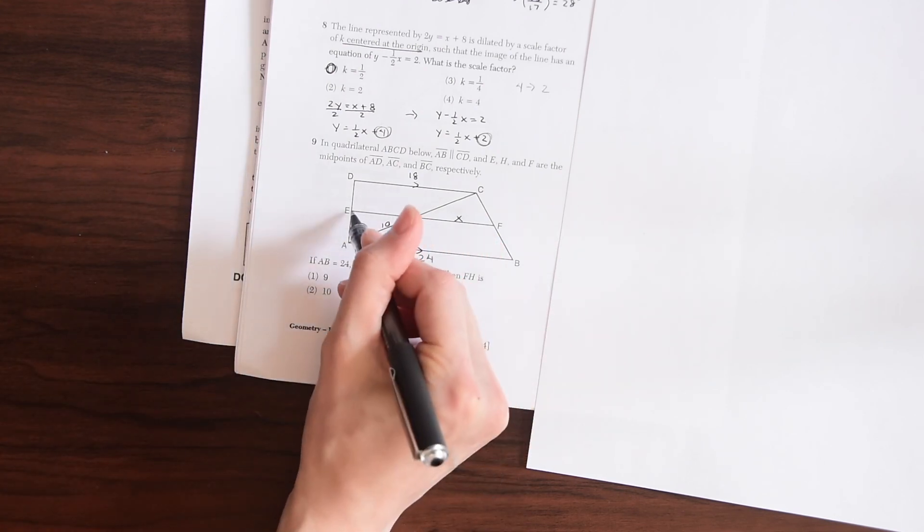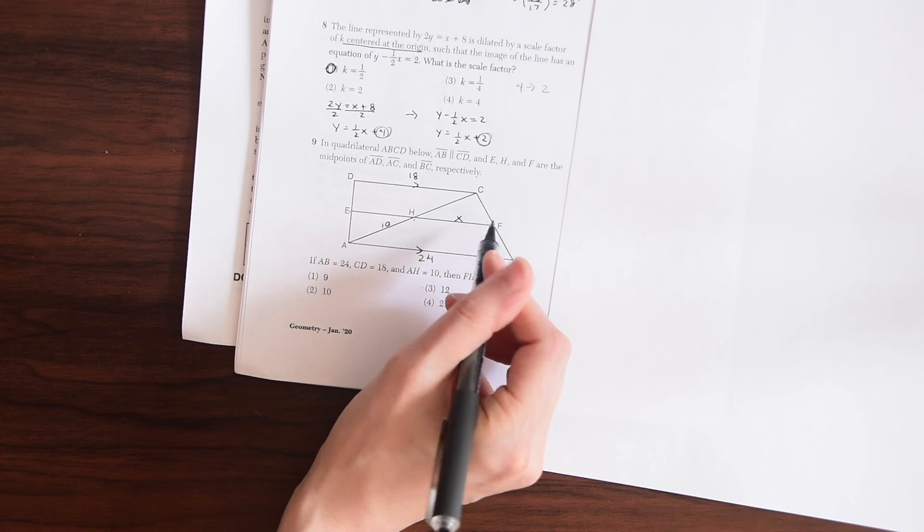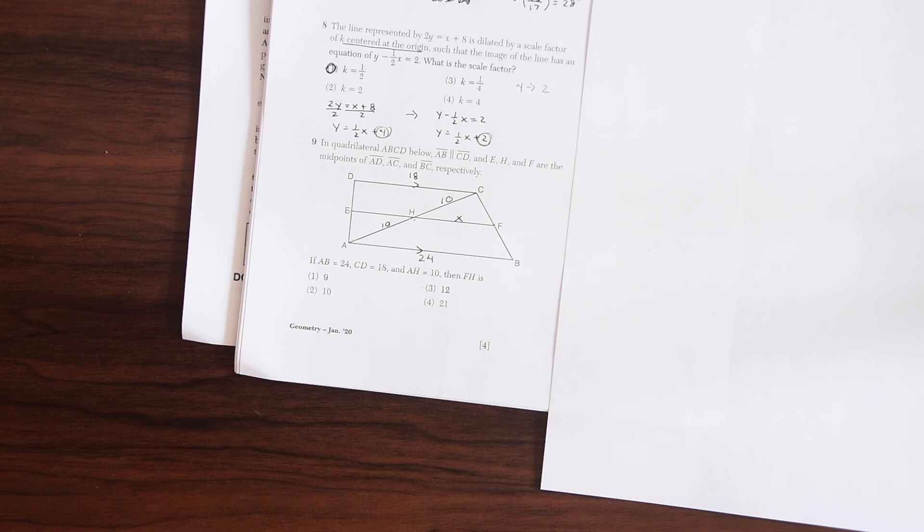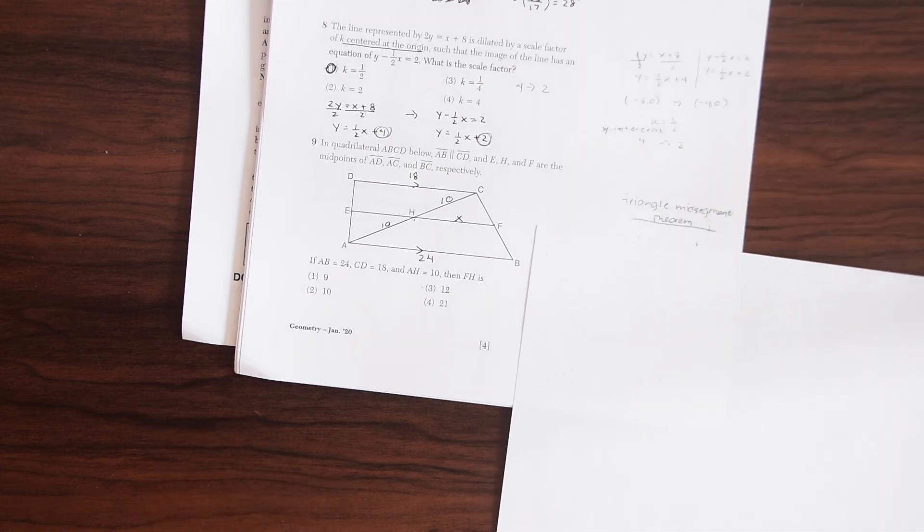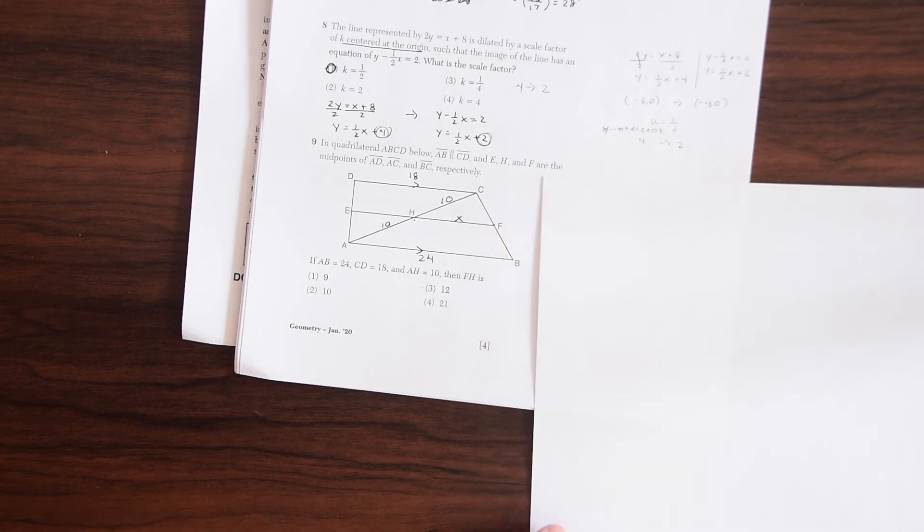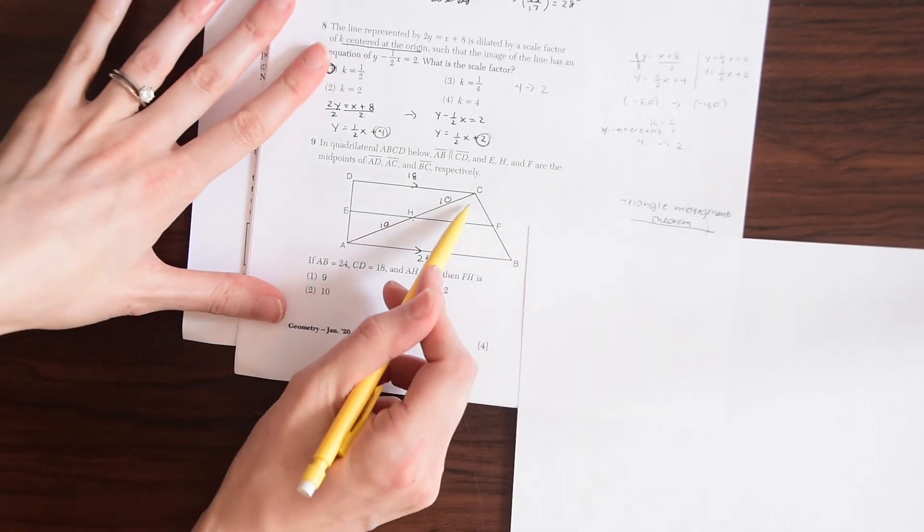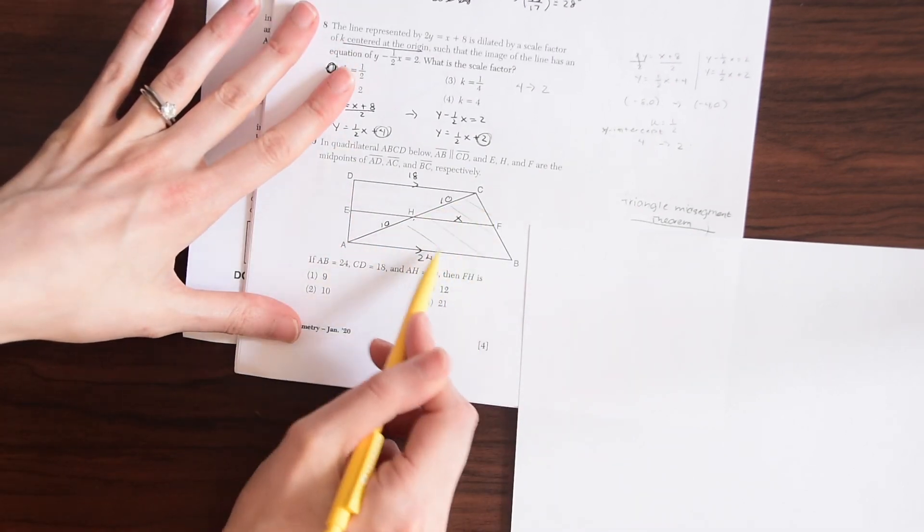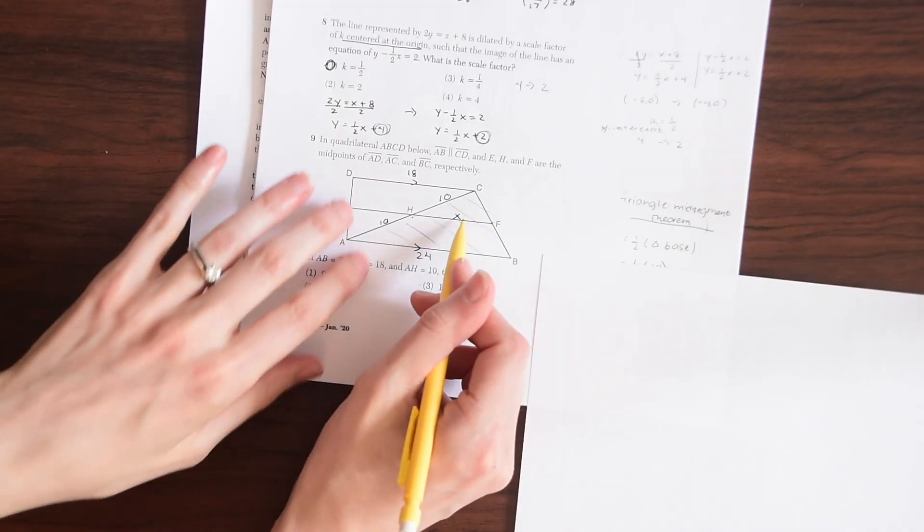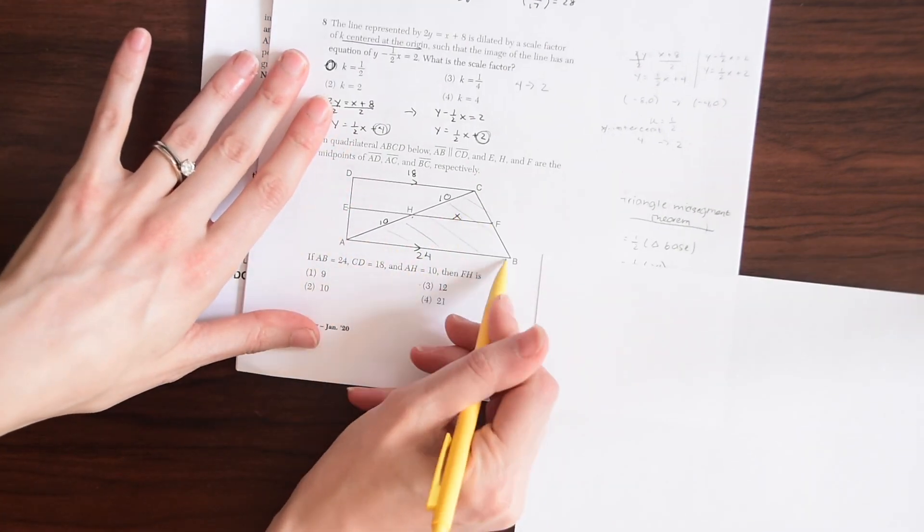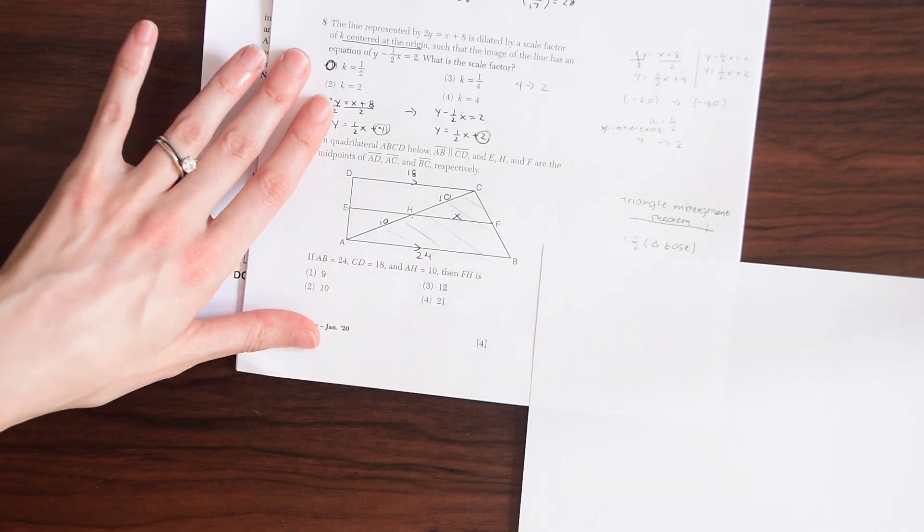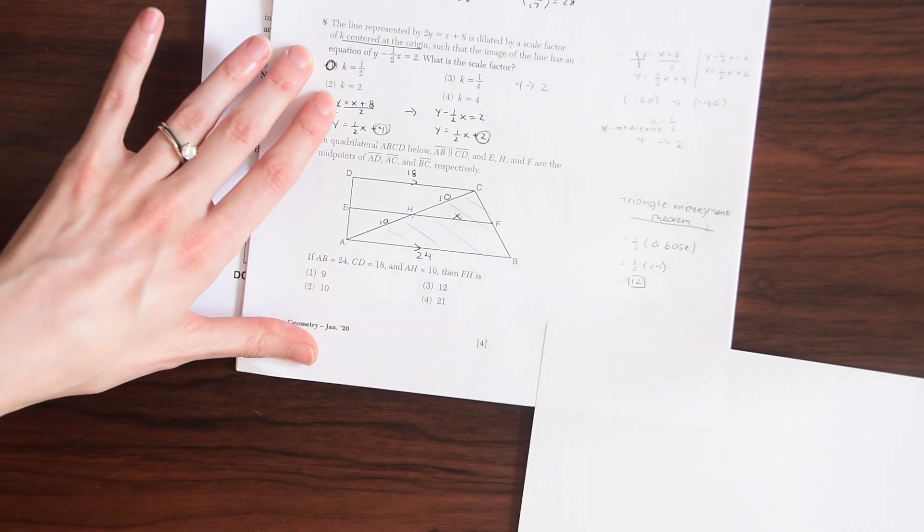So right away, we can look at this and realize that we're going to need to use the triangle mid-segment theorem. So if you look at this, let me shape this in to use the triangle mid-segment. So if we have this whole triangle, and then this is a mid-segment, so that means that this length is going to be half the base, which is down here, 24. So when we plug that in, half of 24 is 12, which is our answer.